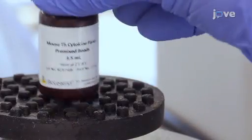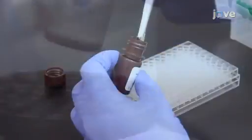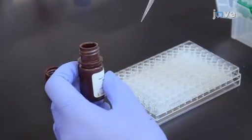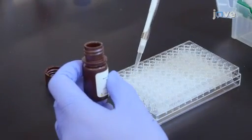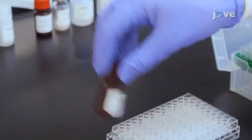Vortex the mixed beads for 30 seconds. Then add 25 microliters of the mixed beads to each well, shaking the bead bottle intermittently to avoid bead settling.